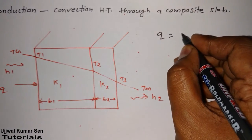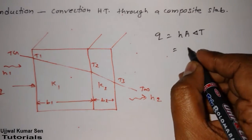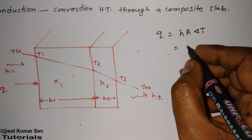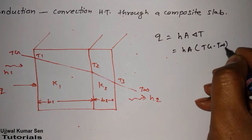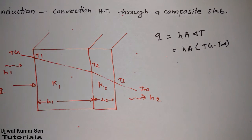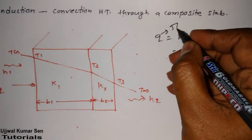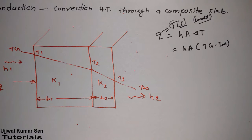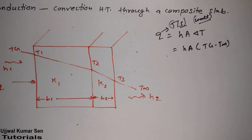Newton's Law of Cooling states: q equals h times A times delta T. If we use Tg and T-infinity, we can write: q equals h times A times (Tg minus T-infinity). Here, A is area and h is the heat transfer coefficient, with units of joules per second. Note that while k is thermal conductivity, h is the heat transfer coefficient, and their units are different because their formulas are different.